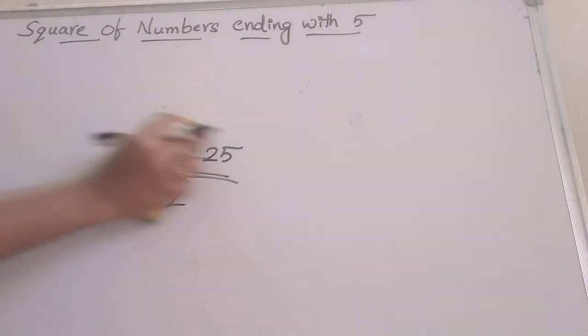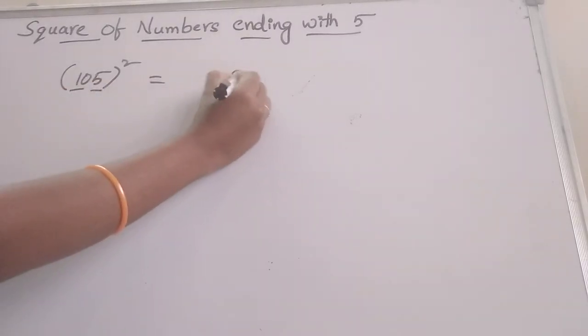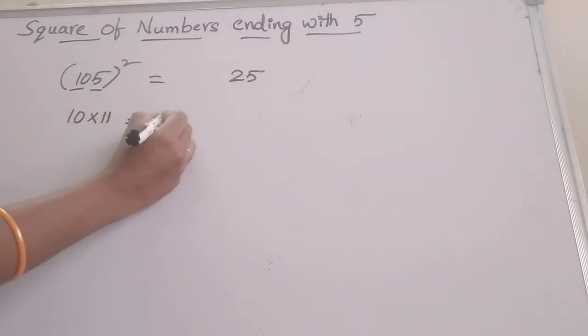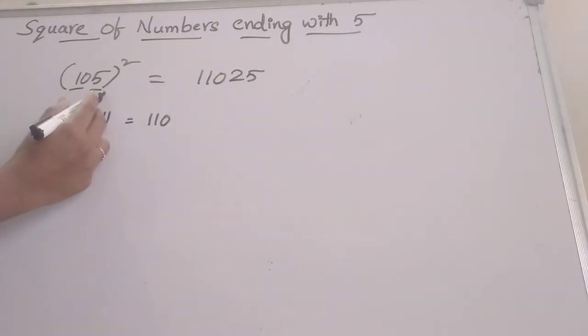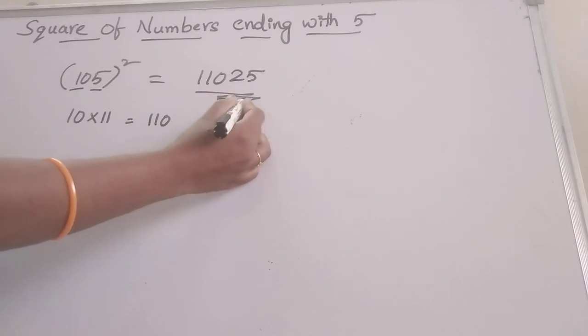Now, we can move to one more example: finding the square of 105. Same process - we divide it into two parts. This is 10 and 5. 5 squared is 25. 10 should be multiplied with 11. This is 110. Write 110 here. What is 105 squared? 11025. This is so simple.